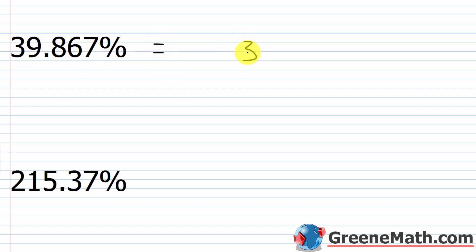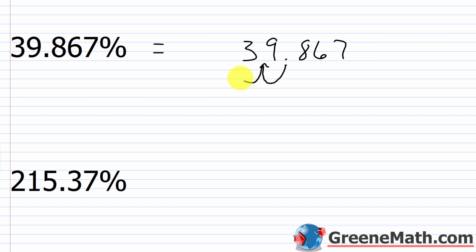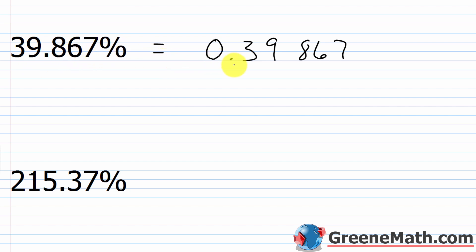For the next one, we have 39.867%. I'll just rewrite the number 39.867 without the percentage symbol, then move this decimal point two places to the left. Let me put a zero out in front for clarity — so 39.867% is equal to 0.39867.